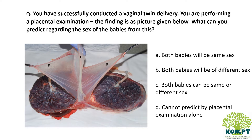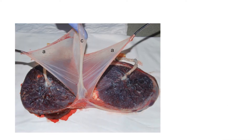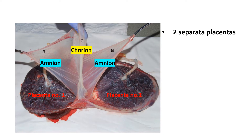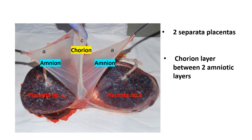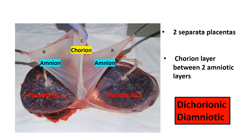This question needs to be cracked in two steps. First, we need to identify what type of twin gestation this is. Second, we need to know what gender combinations are possible in that type of twin gestation. Looking at the picture, we can observe placenta number one and placenta number two — two totally different placentas — with a chorionic membrane in the center and two amniotic membranes, one on each side. So there are two separate placentas and a chorionic membrane between the two amnions.